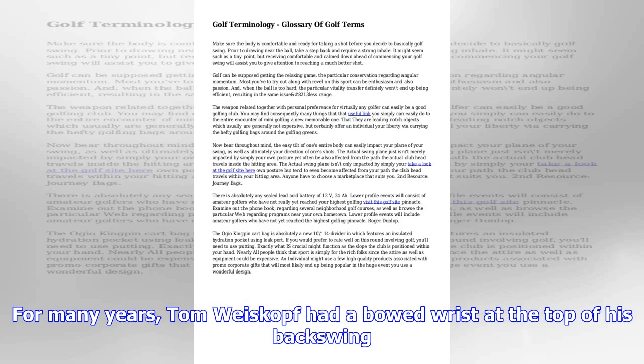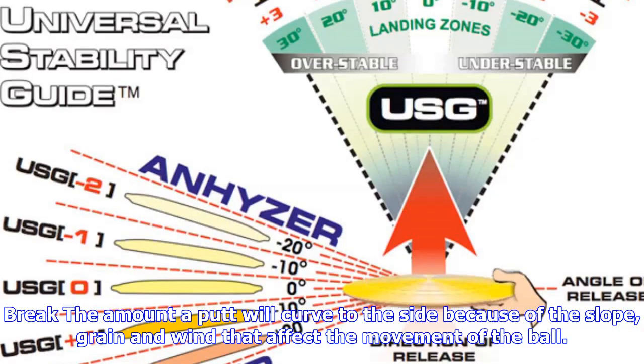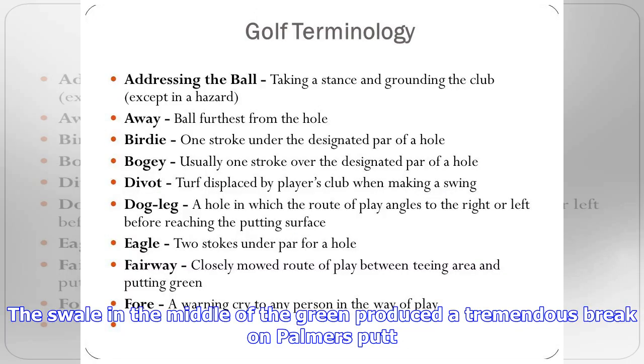Block: a swing in which the rotation of the forearms is delayed or prevented throughout the hitting area, generally producing a shot that flies to the right of the target. With a pond guarding the left side of the green, Ernie Els blocked his approach shot to the right of the flag.